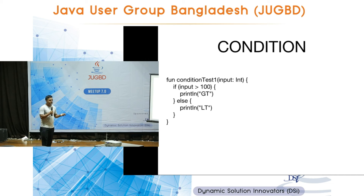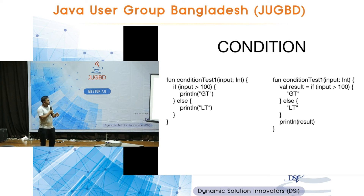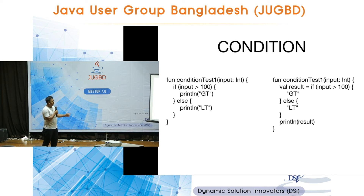Conditions work the same as in Java, but you can also use them as expressions. For example: val result = if (input > 100) 'GT' else 'LT'. The result is assigned based on the condition, and you can then do something with that result value.